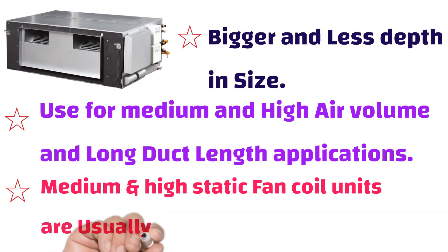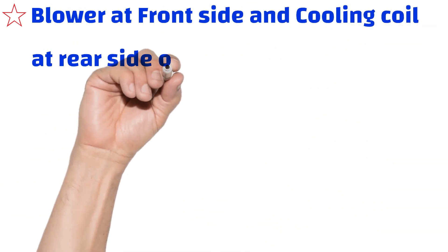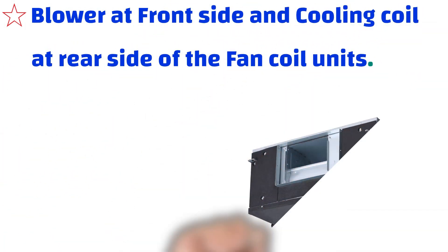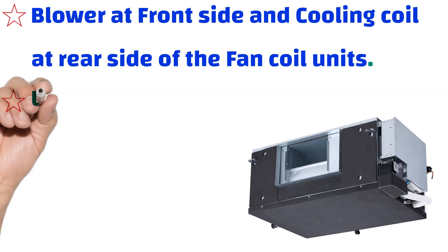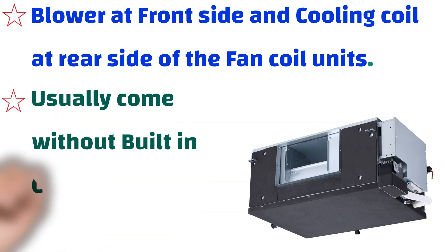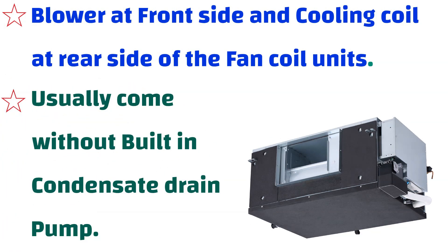Three, medium and high static fan coil units are usually a draw-through unit. Four, blower at front side and cooling coil at rear side of the fan coil units. Five, usually these units don't come with condensate drain pump.